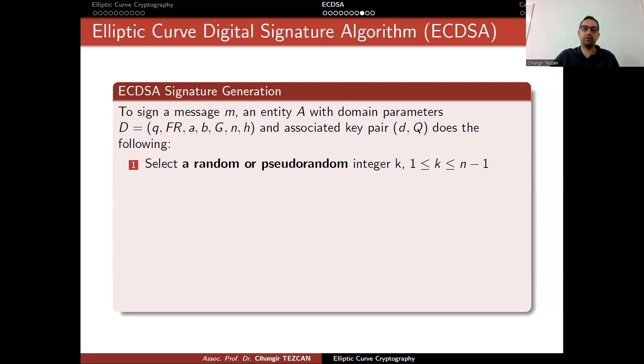This happened in many Bitcoin accounts because the random number generator was, there was a bug in Java, in Android. Some people sent Bitcoins to two different addresses. They had two transactions using the same k. Their private key got captured and people stole their Bitcoins. Let's go back to signature generation.